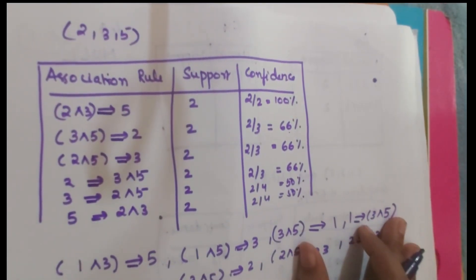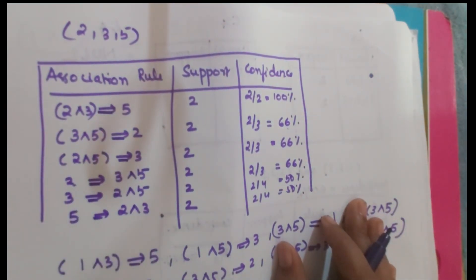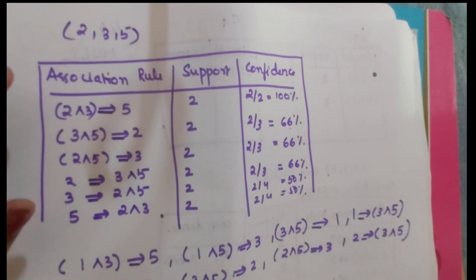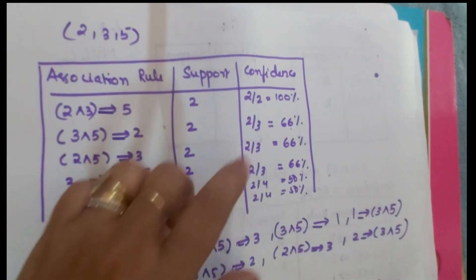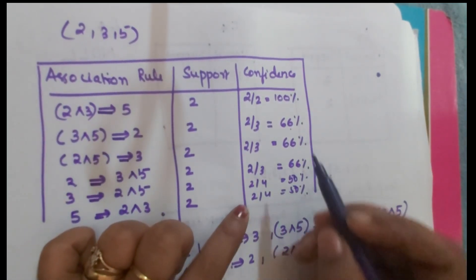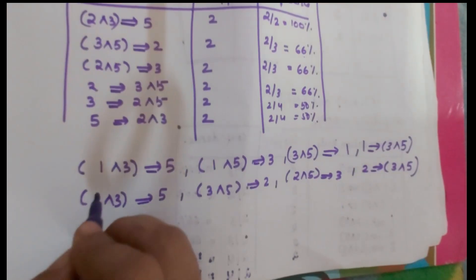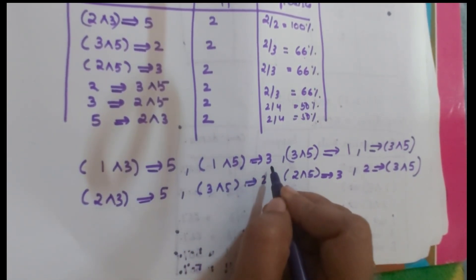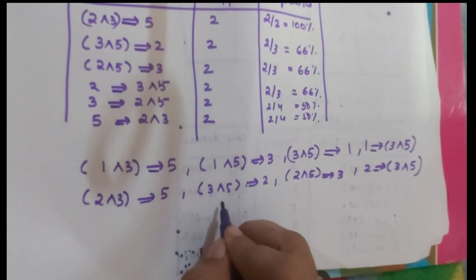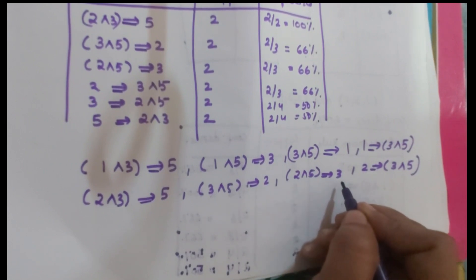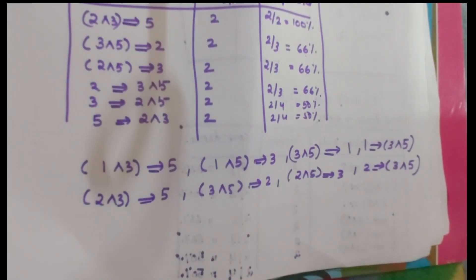For the frequent item set {2,3,5}, we similarly generate strong association rules from all non-empty subsets. The support is 2 and confidence is calculated for each rule: {2,3}→5, {2,5}→3, {3,5}→2, {2}→{3,5}, {3}→{2,5}, {5}→{2,3}, {2,3}→5, and {2}→{3,5}. Rules satisfying the minimum confidence of 60% are selected as strong association rules.